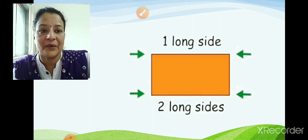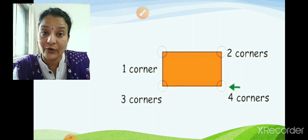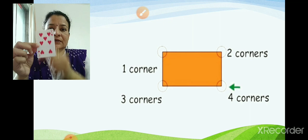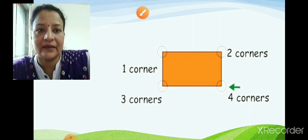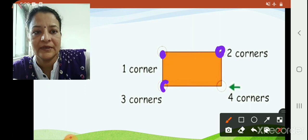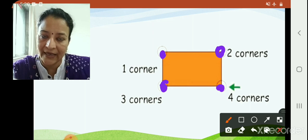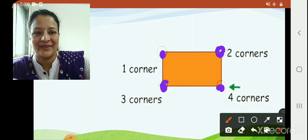Now, it has four corners. Four corners means one, two, three, and four. Four corners. Now, like here — see children — one, two, three, and four. Four corners. So, four sides and four corners.